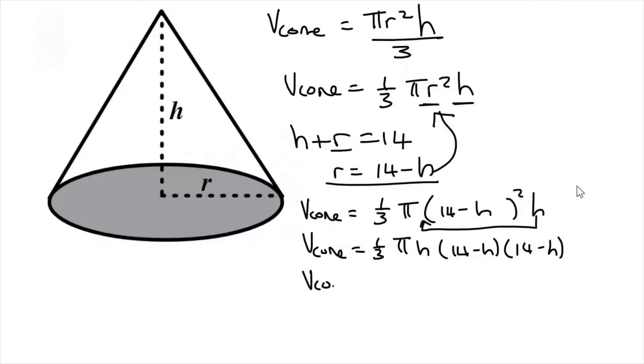And so now we can just simplify. So volume cone is going to be a third pi h. And I'm just going to multiply these two together, these two brackets. So that's going to be 196 minus 28h plus h squared. We're then going to multiply the third pi h into that.